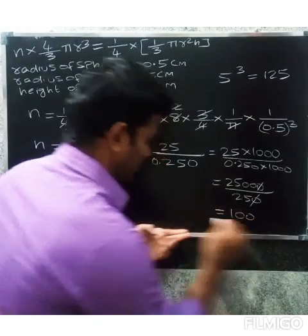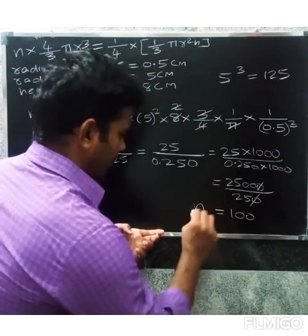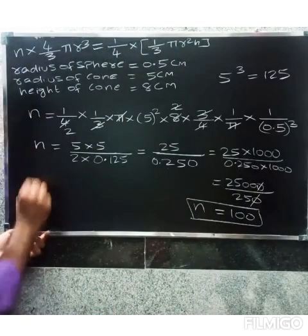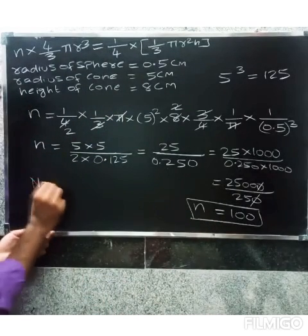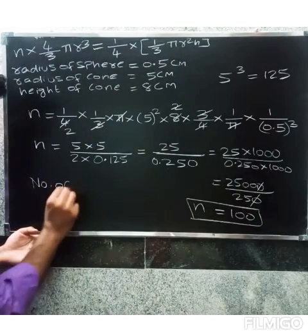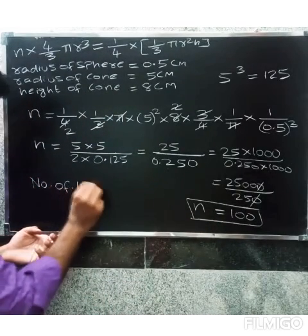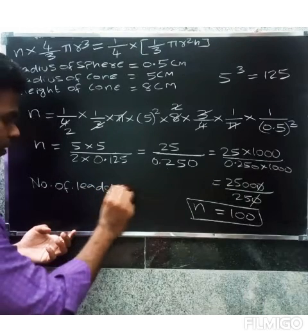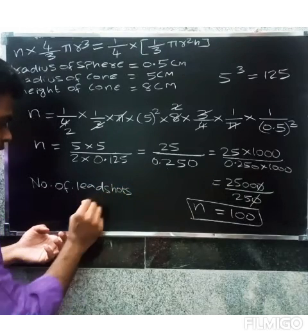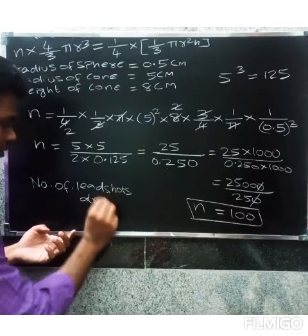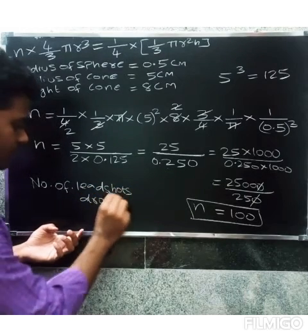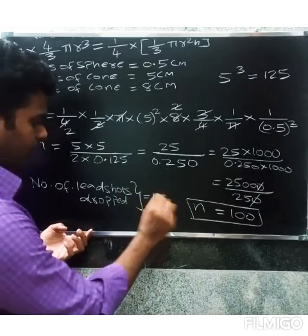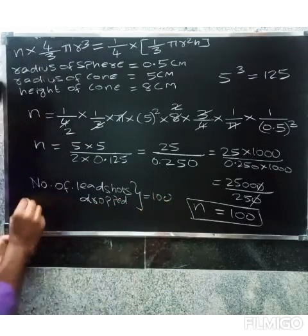So n equals 100. Therefore, the number of lead shots dropped into the vessel equals 100. Thank you.